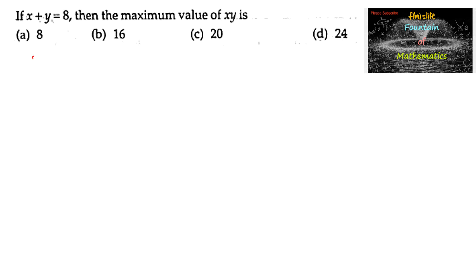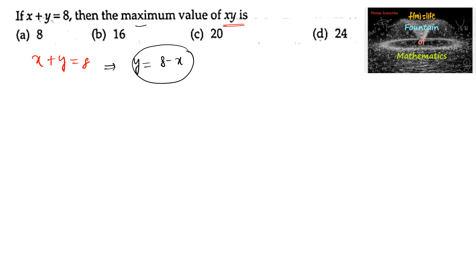If x plus y is equal to 8, then the maximum value of xy — when x plus y is equal to 8, we can write y is equal to 8 minus x. And we want the maximum value of the function xy, so we can write xy as x into 8 minus x.